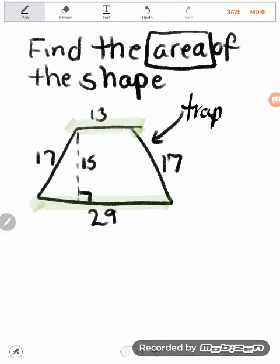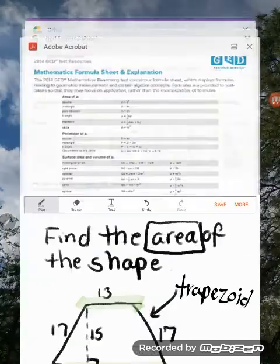I'm finding the area of it. I like this calligraphy pen. Okay, so I'm finding the area of a trapezoid. Now let's revisit our formula sheet.